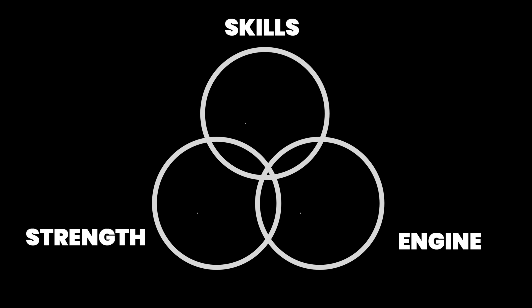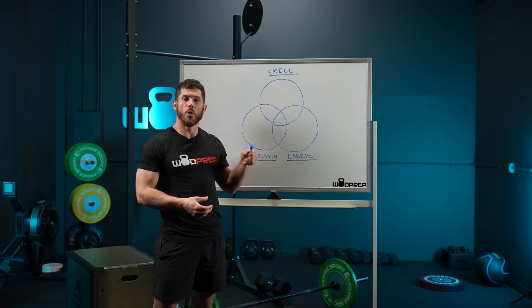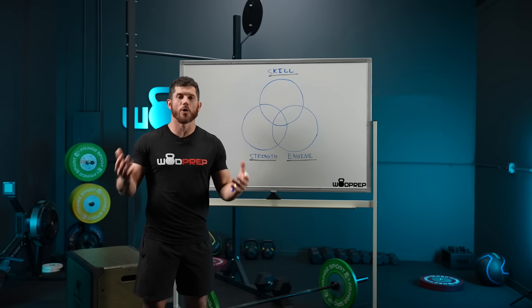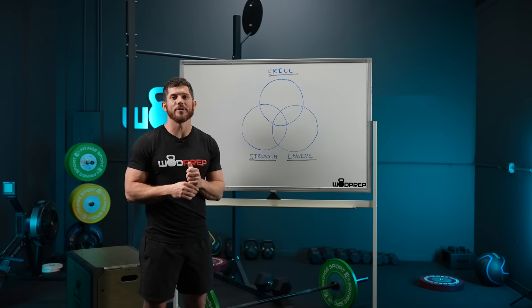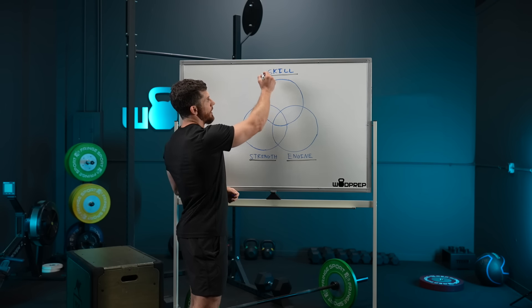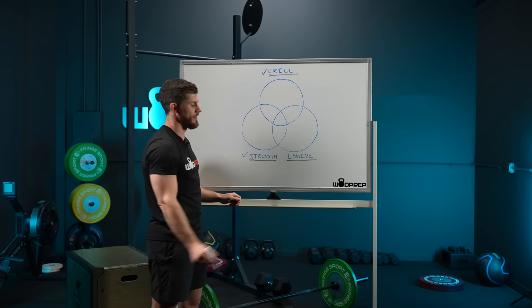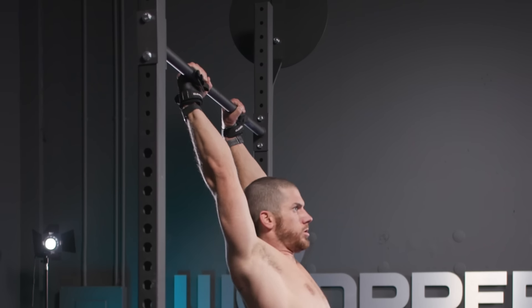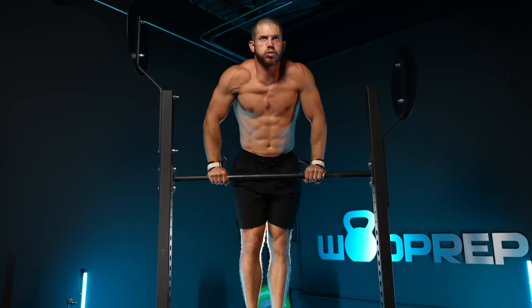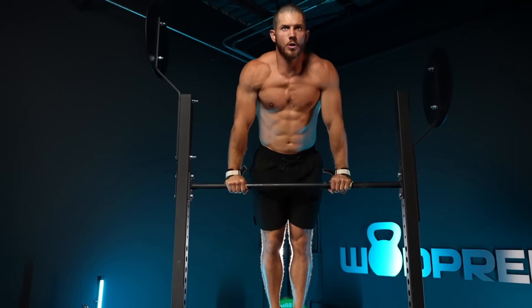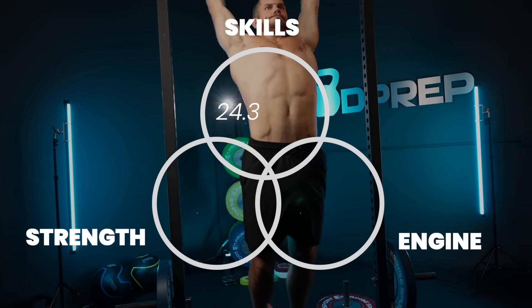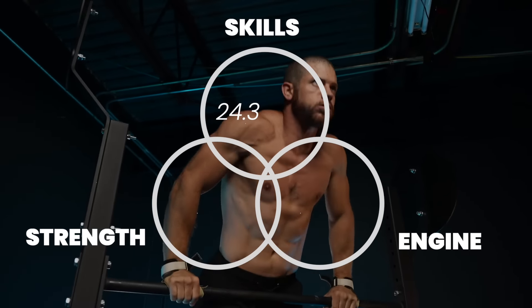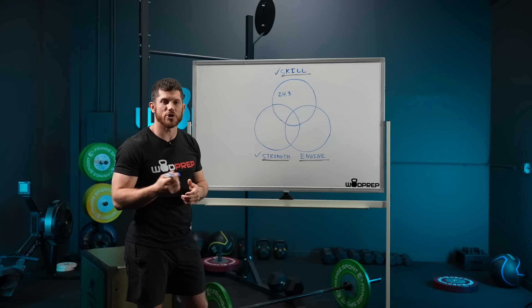Every single Open workout, any single workout that you do for some sort of score in the sport of fitness is going to have one, two, or all three of these components. If we look at the Open workouts and we identify our scores, I'm going to start with my best score. My best score happened on 24.3. That's because I'm pretty good at skills and I have decent strength. 24.3, chest-to-bar, thrusters at a light weight, and bar muscle-ups, thrusters at a heavy weight. So I'd say 24.3 was very much a heavy skill workout.